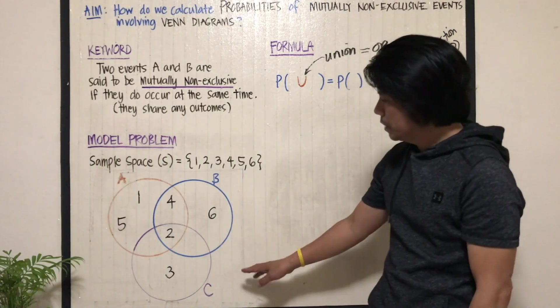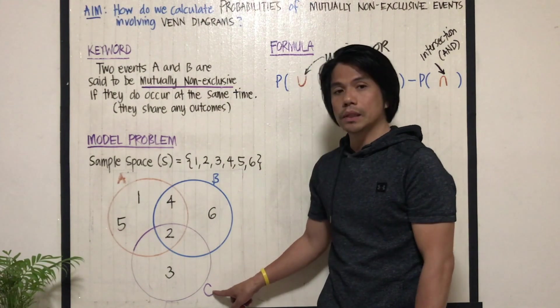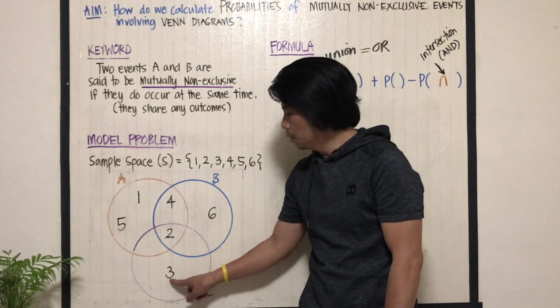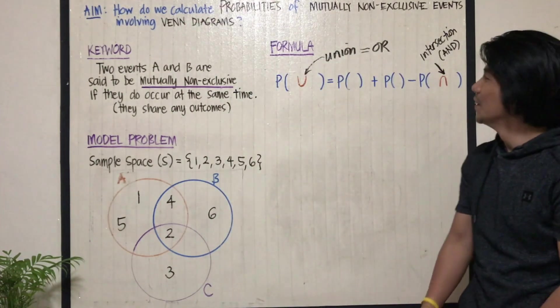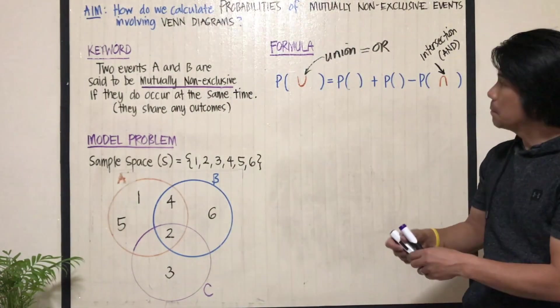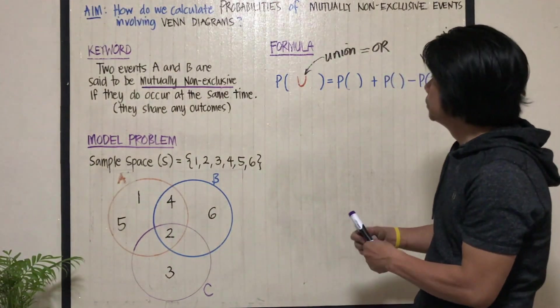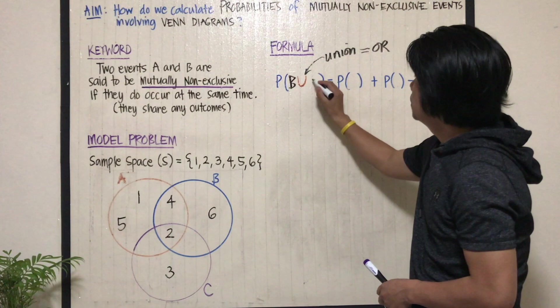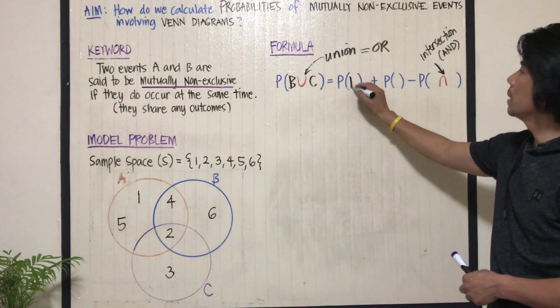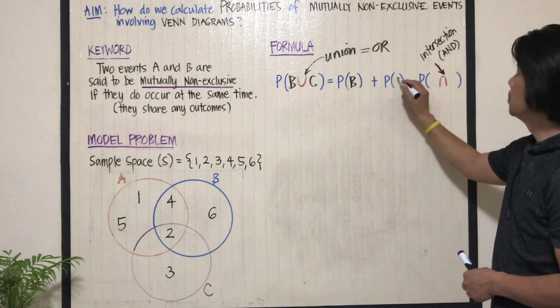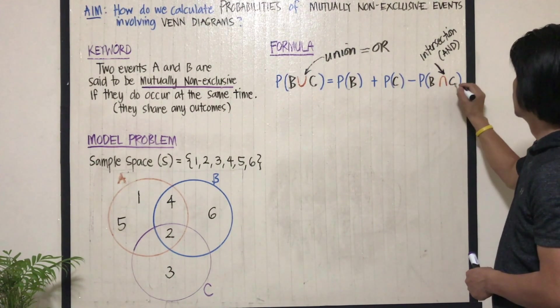Now, let's try to introduce another event C where event C contains two and three. Now, if we want to find the probability of event B union C, that is obviously the probability of B plus the probability of C minus their intersection. Let's see.